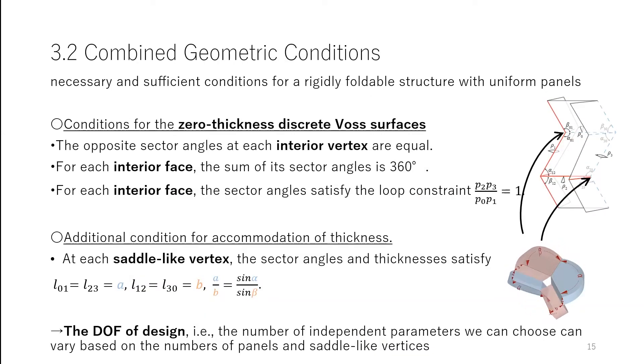We set the design parameters as the sector angles at each corner and the thicknesses of each panel. Now, necessary and sufficient conditions for rigidly foldable structure can be obtained. These are the rigid foldability conditions for the zero-thickness discrete Voss surfaces. And this is additional condition for accommodation of thicknesses at each saddle-like vertex. When all these conditions are met, we obtain rigidly foldable surfaces with thicknesses.